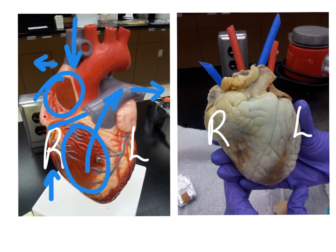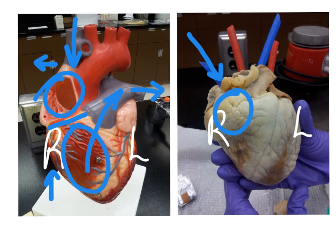Now looking at the sheep heart, the deoxygenated blood returning from the body would be coming in the superior vena cava, which you can't quite see because of the view, and also the inferior, which we'll look at when we look at the dorsal view. It comes into the right atria, goes through the tricuspid valve, into the right ventricle, and then right here is the pulmonary trunk, taking the deoxygenated blood to the pulmonary arteries, which will then go to the lungs to be oxygenated.